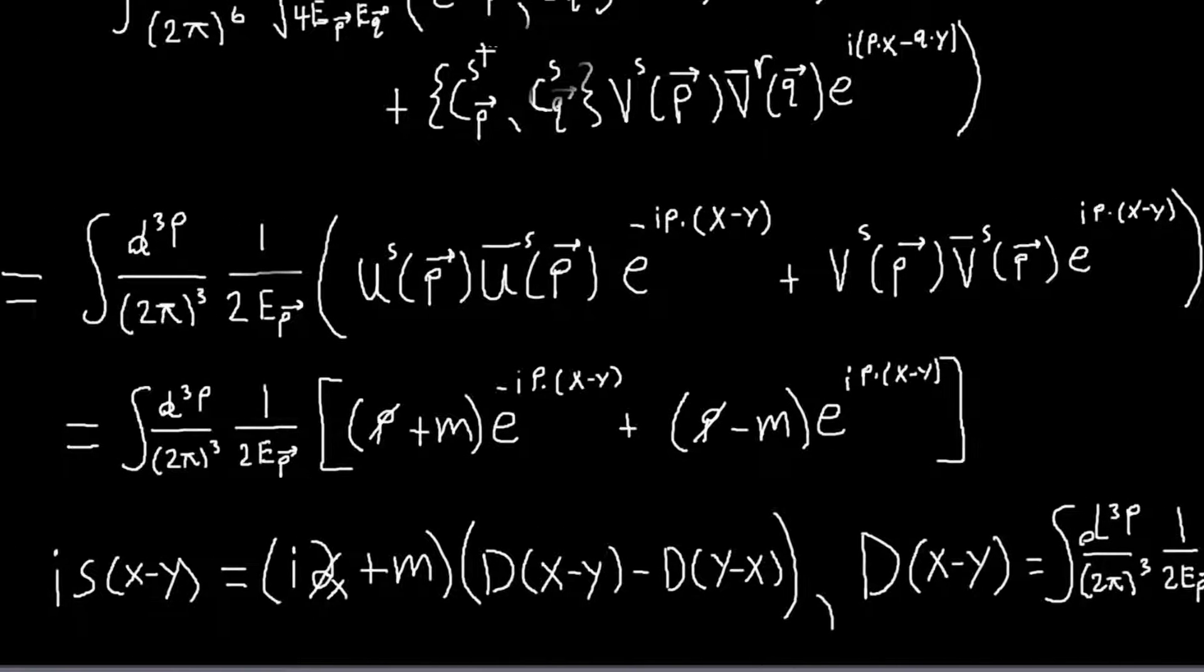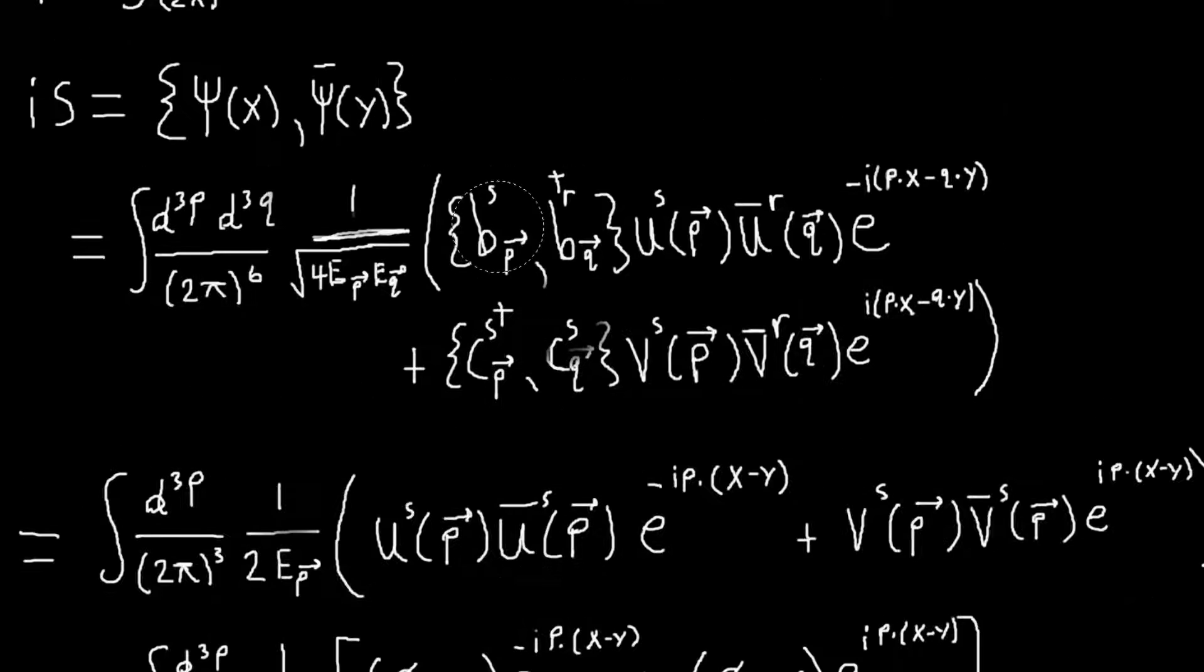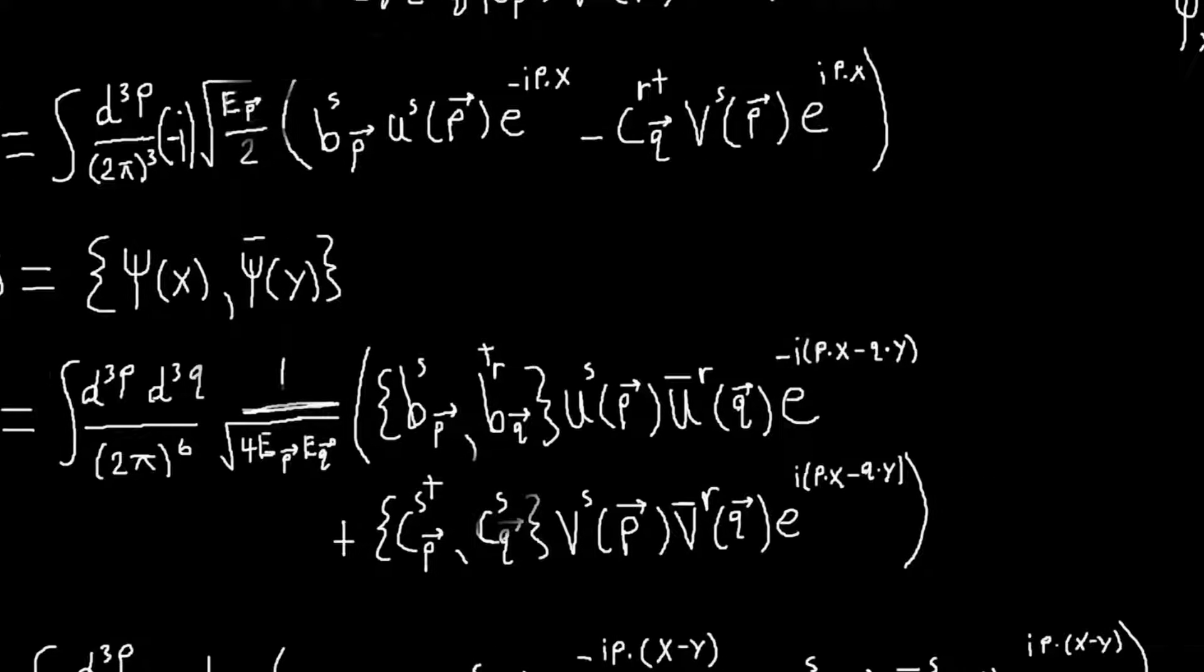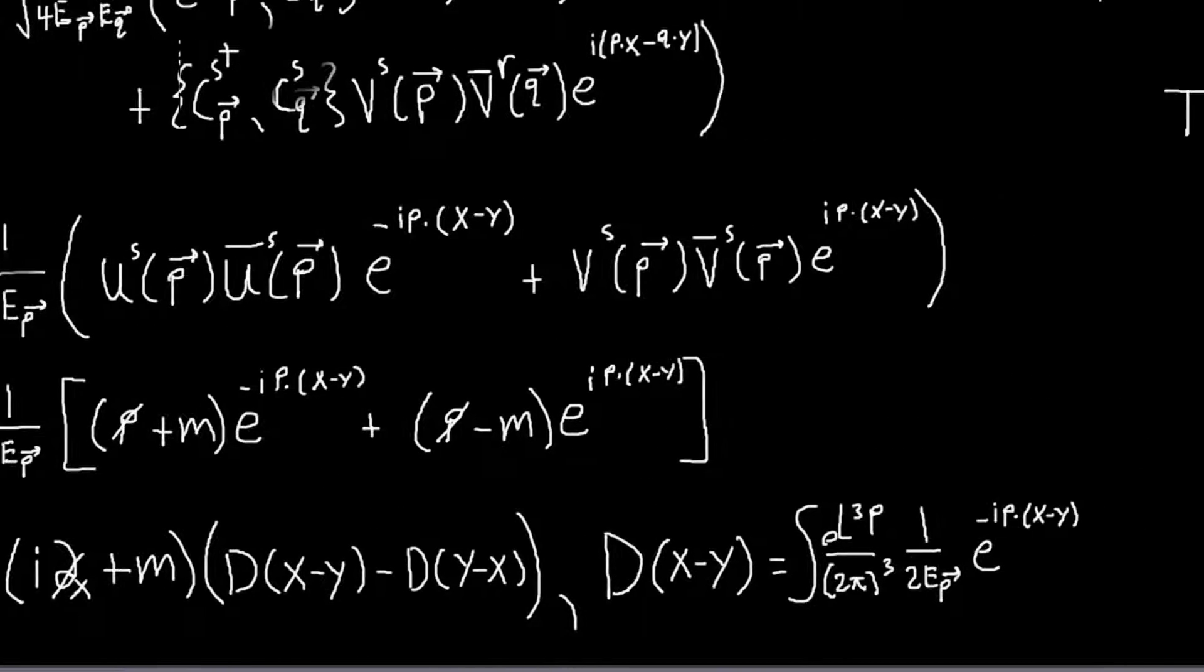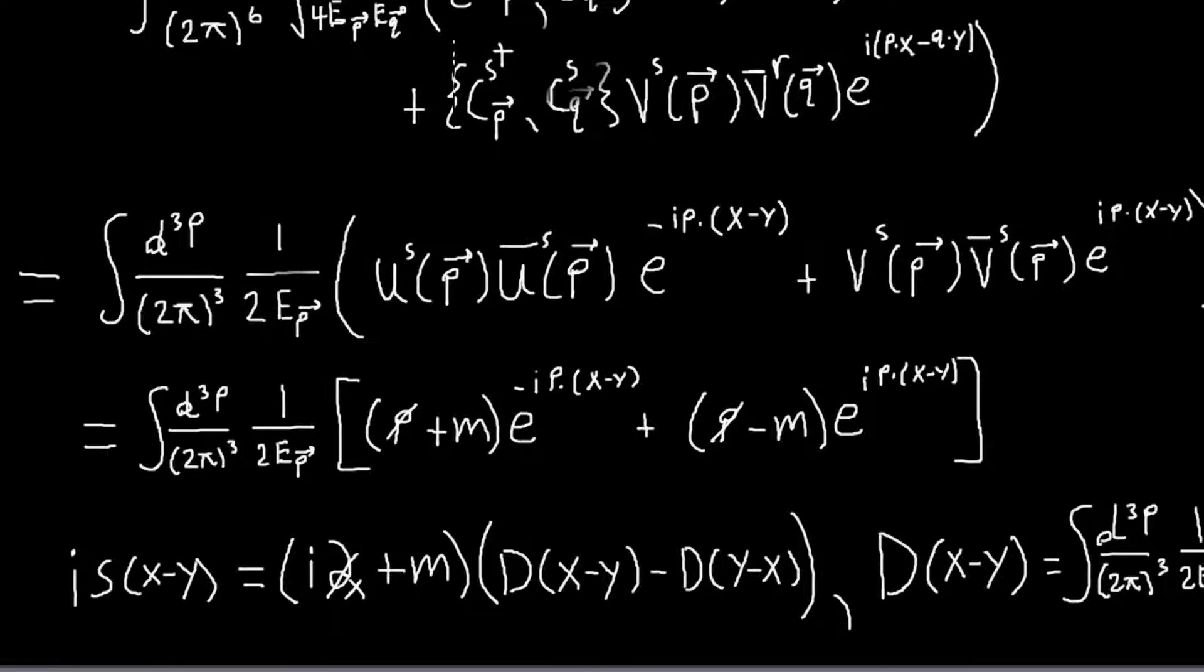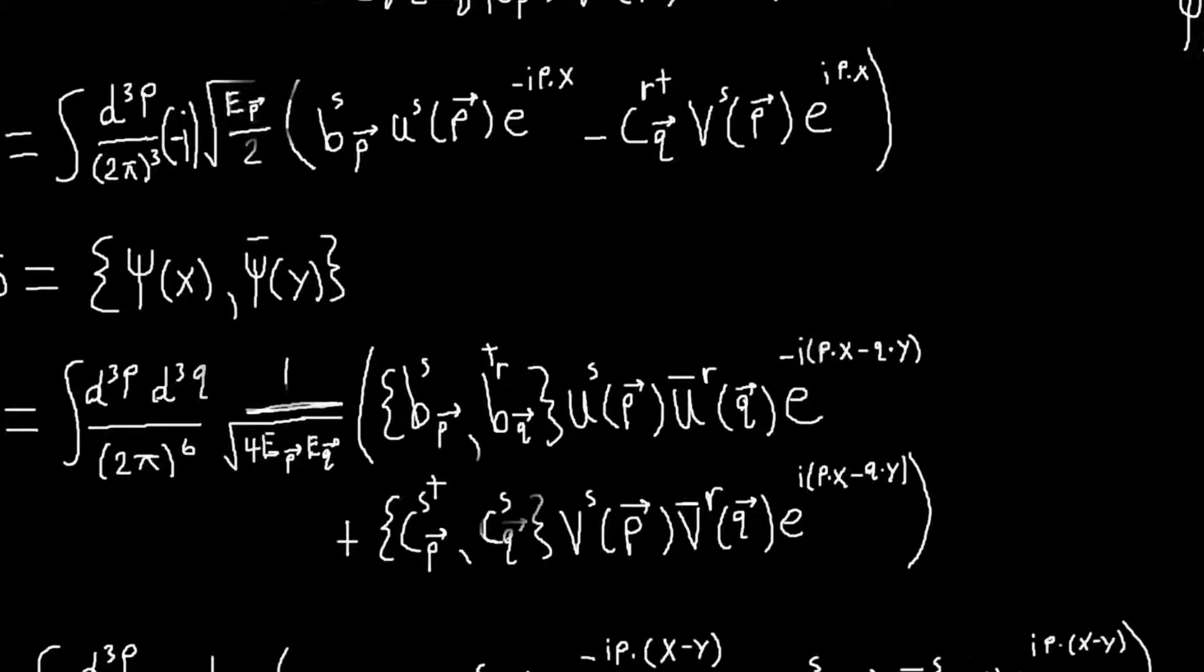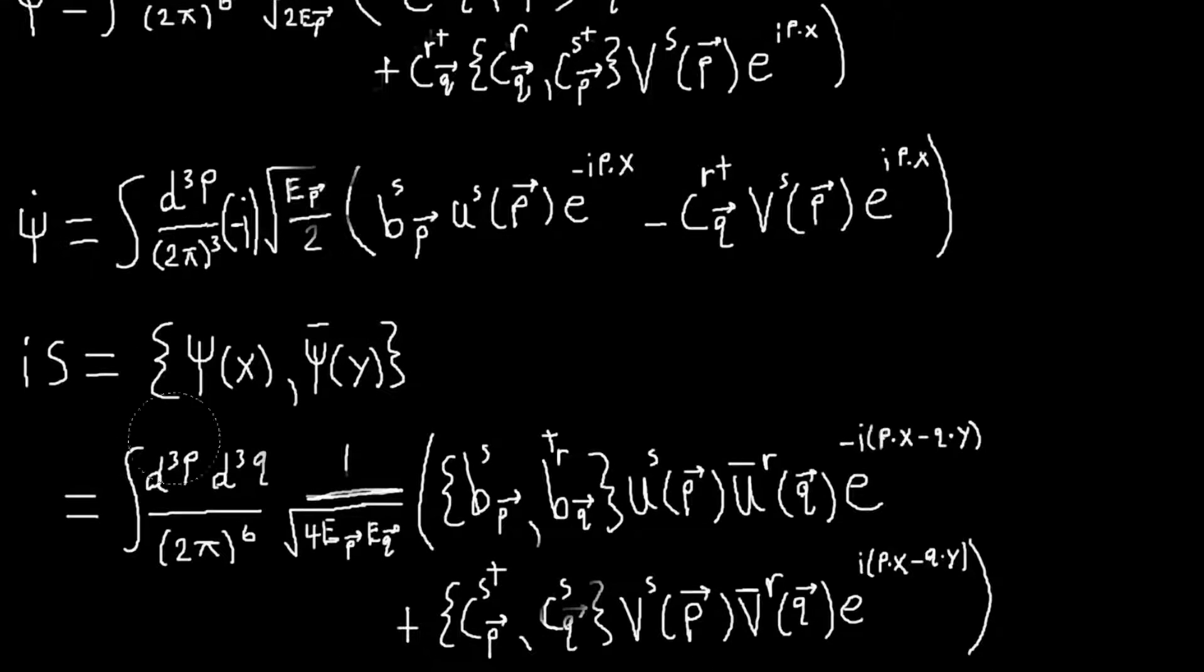But here, so still the thing that you would do to check and see if the fields can affect each other is still the commutator. But now this propagator that we've worked out goes as the anti-commutator of these fields. And this is 0 outside the light cone, but that doesn't tell us that the commutator of these fields is 0 outside the light cone. And in fact, it isn't. It's not. But so that seems bad at first,